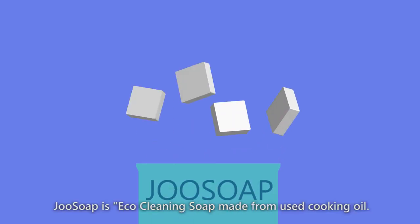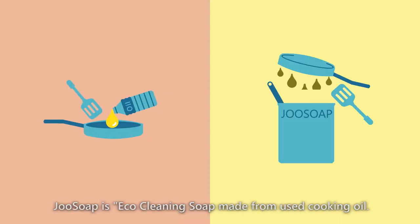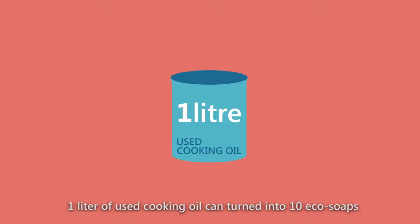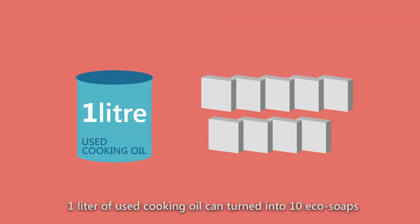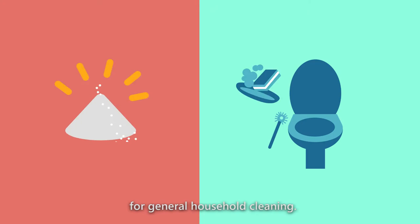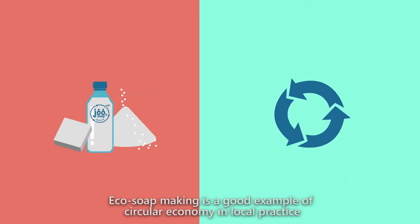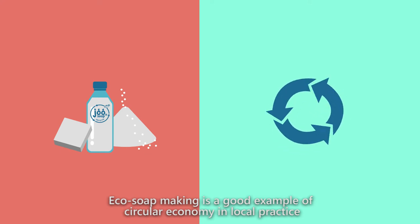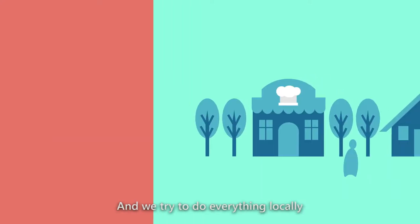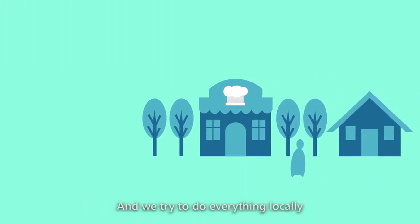What is Yo Soap? Yo Soap is eco-cleaning soap made from used cooking oil. One liter of used cooking oil can turn into 10 eco soaps for general household cleaning. Eco soap making is a good example of circular economy and local practice, and we try to do everything locally.